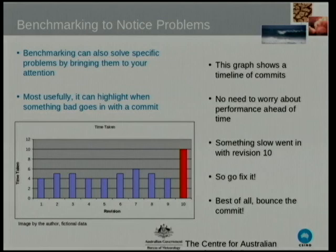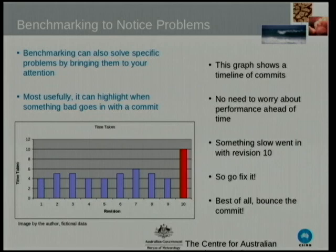You can use benchmarking to notice problems. Instead of speed being something you have to run a specific report for, you can just background it into your build bot. Every time it spikes over some threshold, you get an email. You can push it down so you only worry about it at the latest possible minute, rather than being proactive about it.